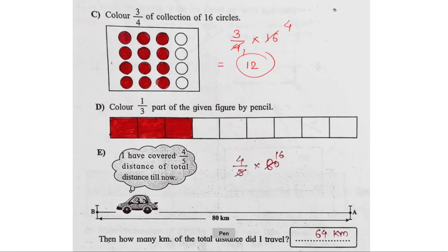I have covered 4 by 5 of the total distance. The total distance is 80 km. I have covered 4 by 5 of 80. So 80 multiplied by 4 by 5.